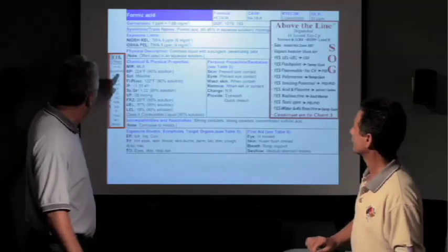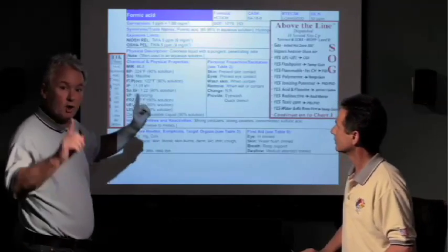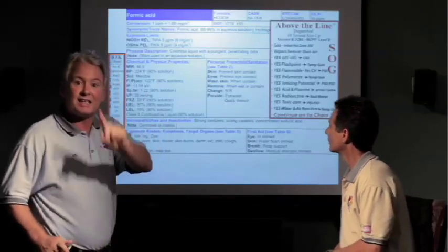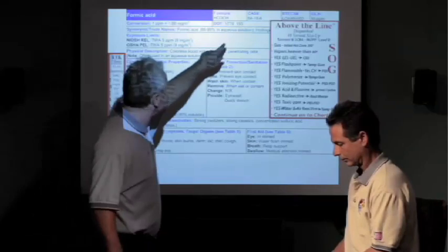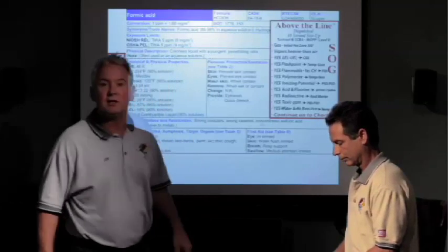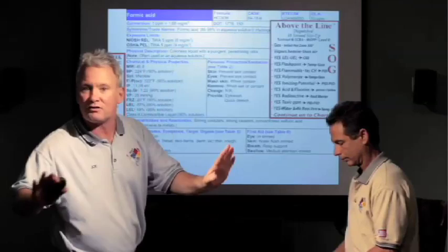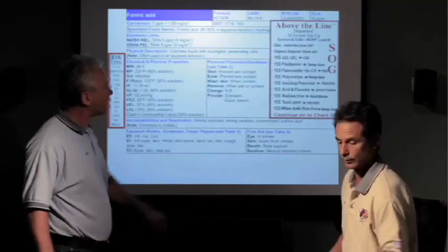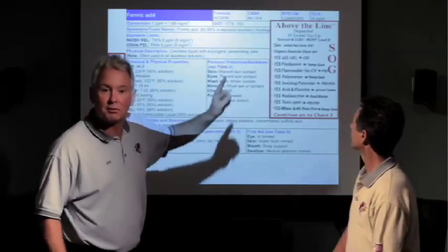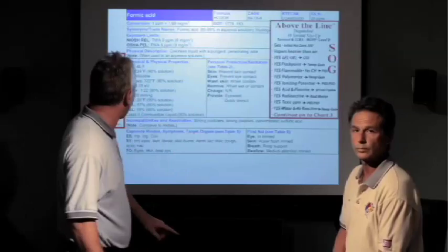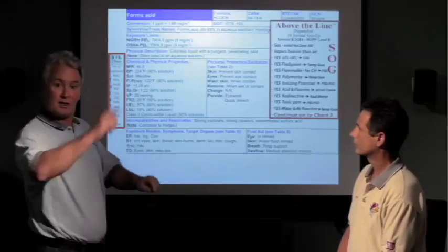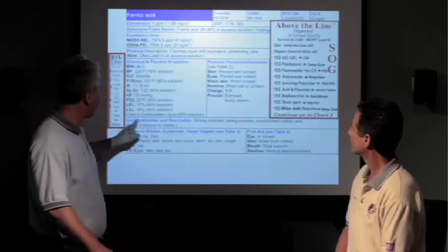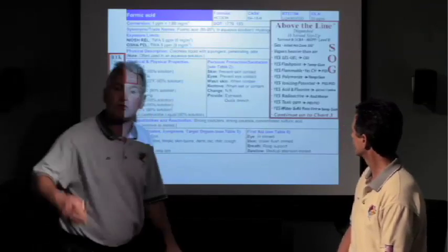New information for non-chart 16 students: chart 16 tells you that explosives have ERG guides 112, 113, and 114. This does not have 112, 113, or 114—not explosive. Next, is it radioactive? Back to the guide number. It's not in the 160s, it is not radioactive. Does it polymerize? Look back to the ERG guide number. No P, nothing down here in the incompatibilities and reactivities. Formic acid does not polymerize.